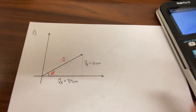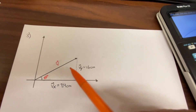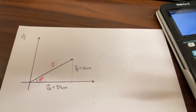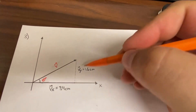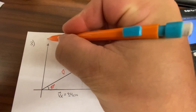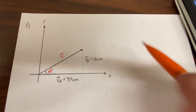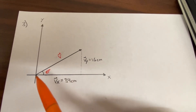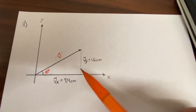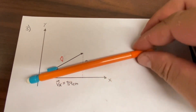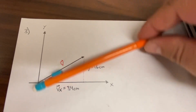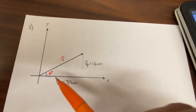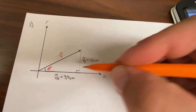Question three deals with vectors. We have vector V which is unknown, with components Vx along the x-axis and Vy along the y-axis. A vector has magnitude — the length — and direction, represented by theta. Theta tells us the direction and V gives us the magnitude. We can treat it like a right triangle since there's a 90-degree angle.